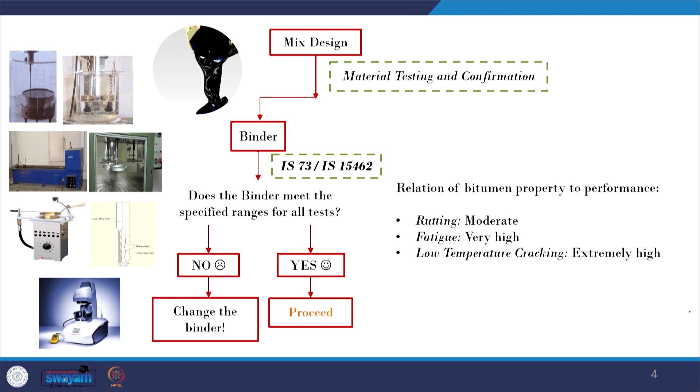Talking about the importance of bitumen with respect to the performance of the bituminous mixture: if you look at rutting or permanent deformation, the role of bitumen is moderate because rutting is a phenomenon more dependent on the shear strength of the aggregate skeleton. However, the stiffness of the bitumen also plays an important role. Coming to fatigue cracking, it is more or less controlled by the properties of the bitumen, although other factors such as air void in the mixture and thickness of the bituminous layer also matter.